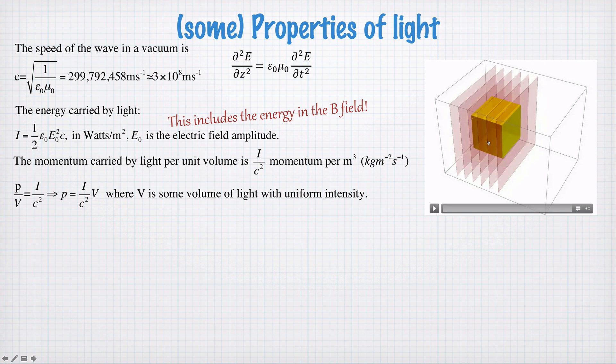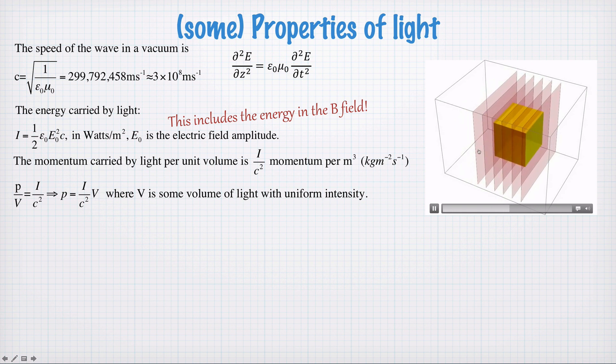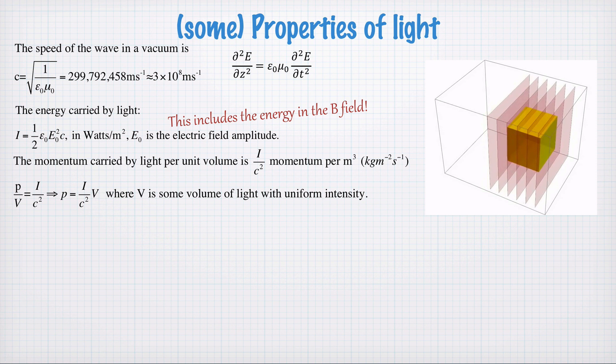So let's consider some volume of a plane wave. So this yellow box here is some volume. And it's tracking along with our plane waves here. The plane waves, remember, have constant electromagnetic field amplitudes through their planes. Inside this box there will be some amount of momentum being carried by our electromagnetic waves. The momentum divided by that volume will be I on c squared.